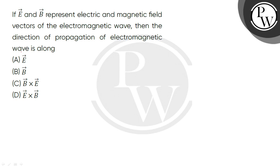We know that the electric field and magnetic field constitute the electromagnetic wave. Both the electric field vector and magnetic field vector constitute the EM wave. In the electromagnetic wave, the electric field vector and magnetic field vector are perpendicular to each other.